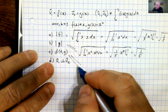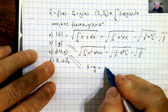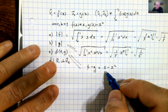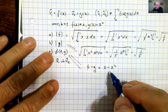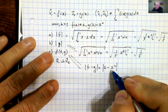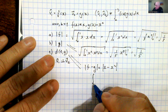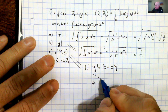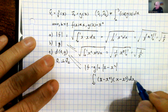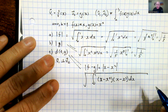Now let's compute the distance between these two. f minus g gives x minus x squared, so that's the difference. I want to compute the norm of this vector, which means I dot it with itself: the integral from 0 to 1 of (x minus x squared) times (x minus x squared) dx, and then take the square root of all of that.